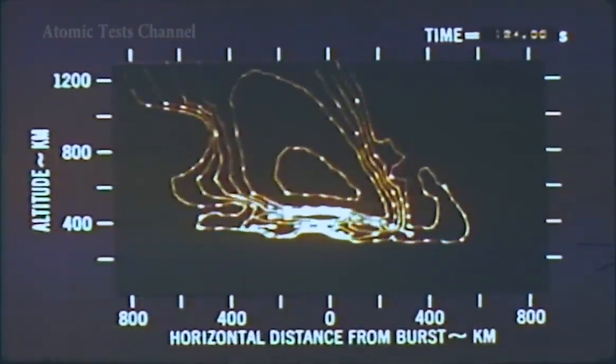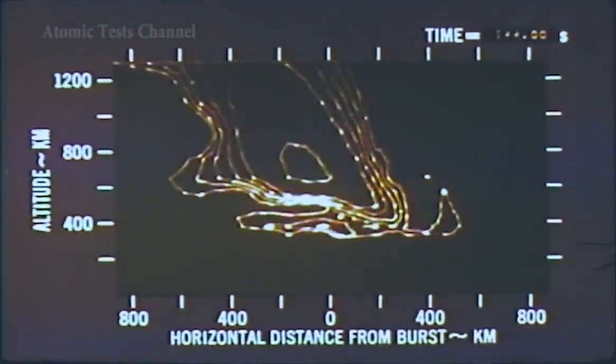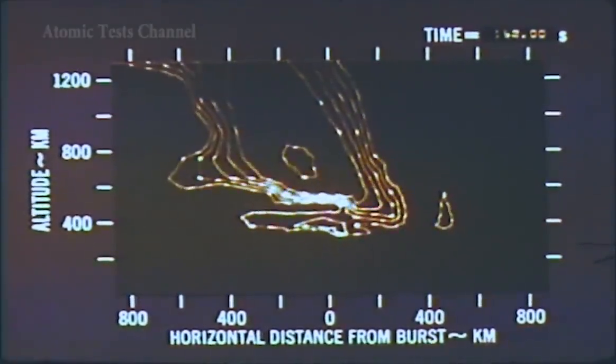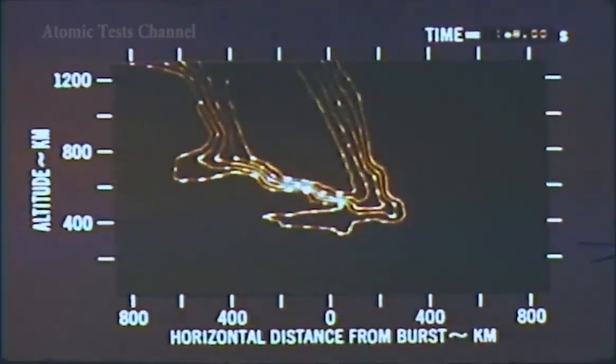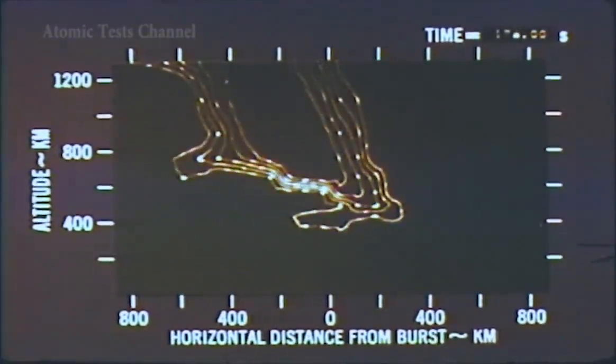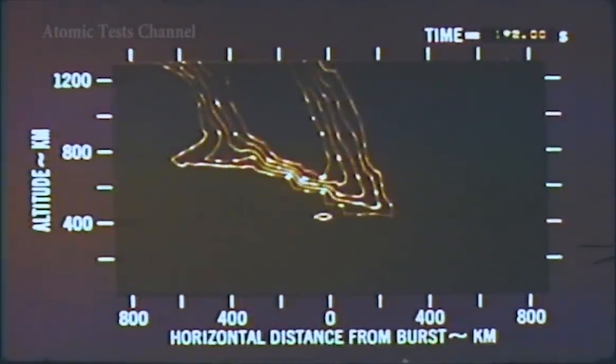The drastic upward movement of ionization seen here is the result of two effects. First, the transport of ionization up the field lines due to rise of the hot gases, and second, an apparent movement due to loss of ionization at lower altitudes as a result of recombination processes.